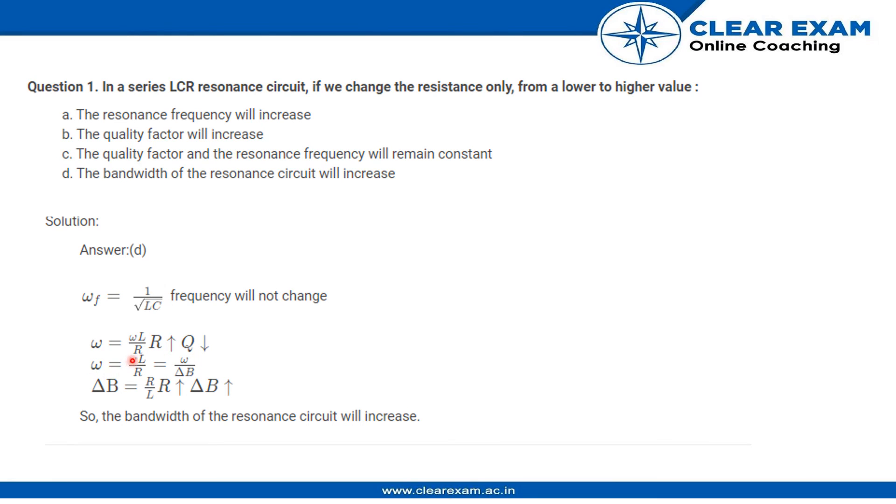We have ω = ωL/R, which is equal to ω/ΔB. Now we know that ΔB = R/L. So as we increase the resistance, the bandwidth of the resonance will increase. Therefore, option D is the correct option.